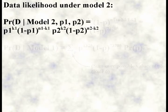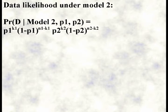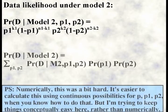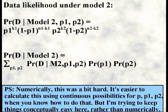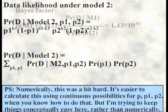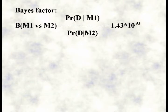Under model 2, the data likelihood can be split into two parts. The data from source 1 is assumed independent from source 2, and so for each possible value of p1 and p2, the data likelihood is p1 to the power of k1, times 1 minus p1 to the power of n1 minus k1, times p2 to the power of k2, times 1 minus p2 to the power of n2 minus k2. We then need to sum over each possible value of p1 and p2. Long story short, if we manage the numerical problems of these large sums, the Bayes factor — that is the data likelihood under model 1 divided by the likelihood under model 2 — is an astounding 1.43 times 10 to the power of minus 53: an enormous support for model 2.